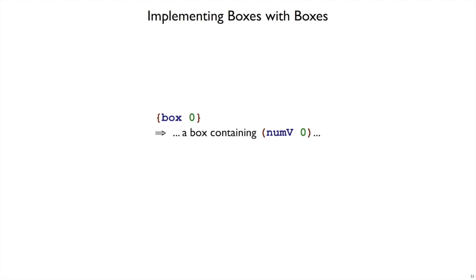So we're going to need a new kind of value to be the result of this program box of 0. It'll need to be some sort of thing that represents a box, and it'll have some other value inside of it, like the numv 0.